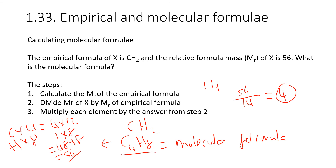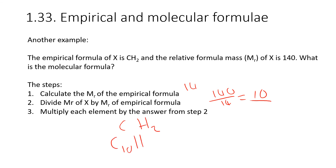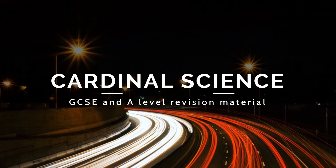Try this one yourself: the empirical formula is CH₂ and the relative formula mass is 140. The Mr of the empirical formula is 14. Dividing: 140 ÷ 14 = 10. Multiplying each element by 10 gives C₁₀H₂₀. Check: (10 × 12) + (20 × 1) = 120 + 20 = 140. ✓ Thank you for watching Cardinal Science. If you need any clarification or help, please leave a comment below, and if you enjoyed the content please like and subscribe.